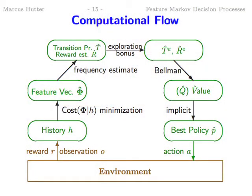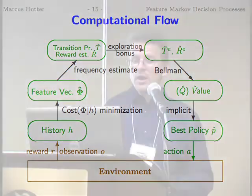Here's the complete model: you have your environment, get reward-observations which lead to histories, have a cost criterion for reductions to MDPs which tells you the best reduction (approximated by phi-hat), then a finite-state MDP where you estimate the transition and reward functions. Add the exploration bonus, solve the Bellman equation, and you get the value, Q-value, and best policy — one that trades off exploration and exploitation — and then you're in the next cycle.